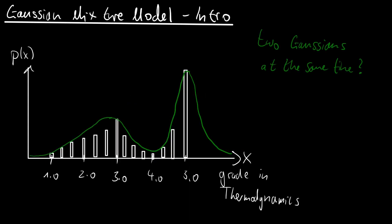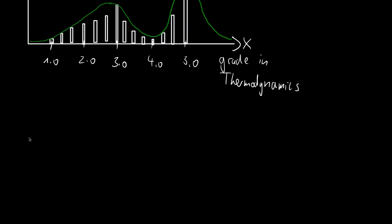Hi, welcome to a new video. Today we want to look at Gaussian Mixture Models. I will give an intuition and then we will see how it is implemented in TensorFlow Probability. In the intro we looked at the distribution of grades for a particularly hard exam, and we saw that there are two peaks in our distribution — that is why we call it a multimodal distribution.